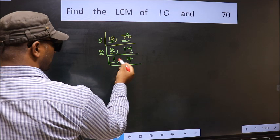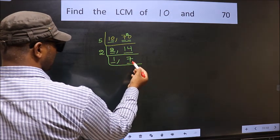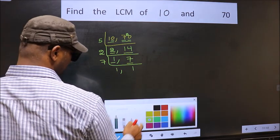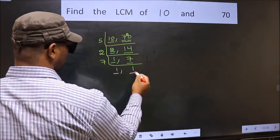Now we got 1 here. So focus on the other number 7. 7 is a prime number so 7 once 7. So we got 1 in both the places.